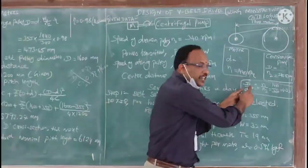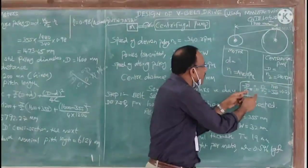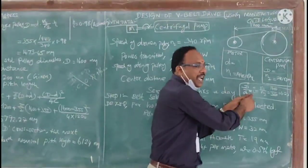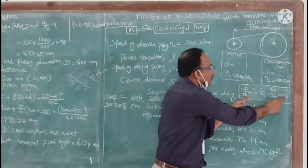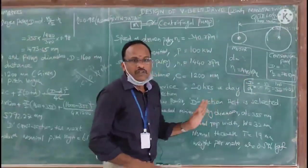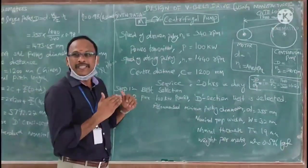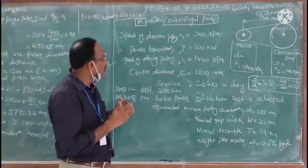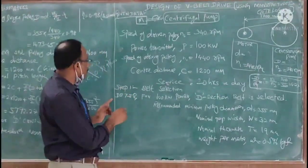For centrifugal pump, capital D is diameter of larger pulley, N2 is given as 340 RPM. Based on these two speeds, we can calculate N1 by N2 is equal to 4.23.